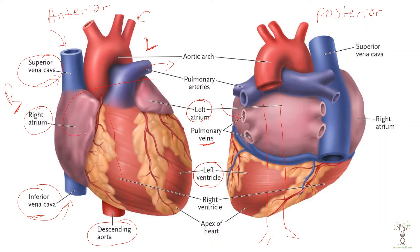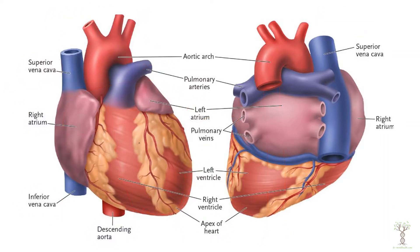The upper part of the heart is actually called the base, and the bottom point of the cone shape is called the apex of the heart. On the surface of the heart we can see the coronary arteries, which supply the heart muscle itself with blood.